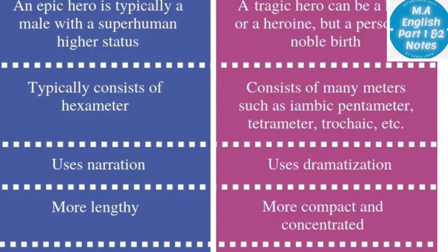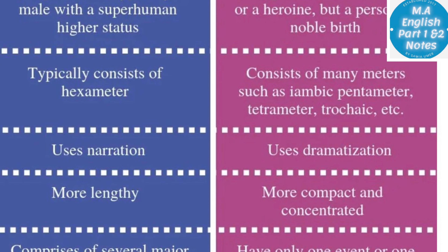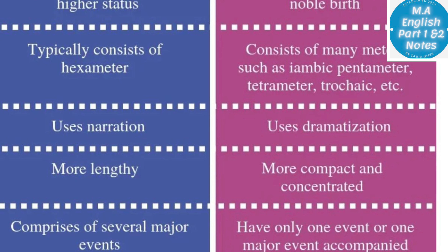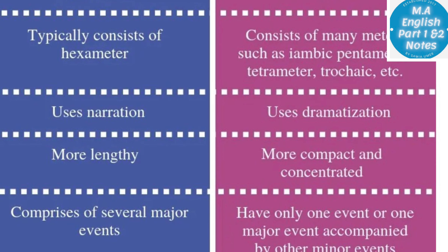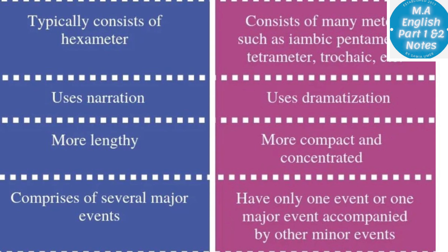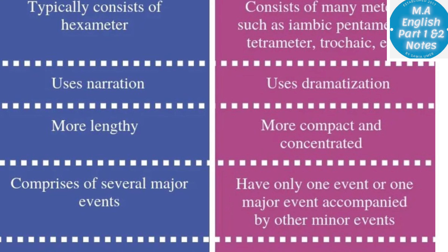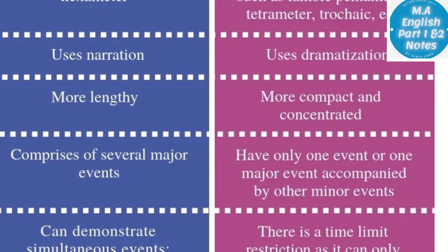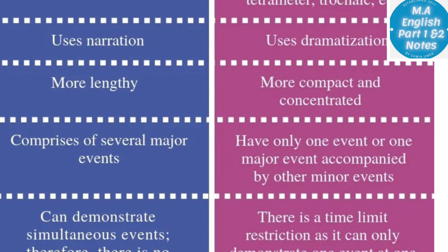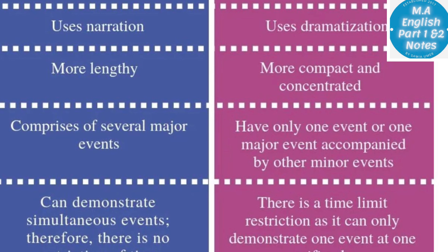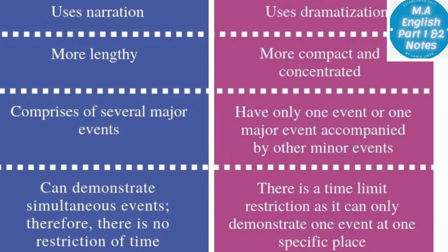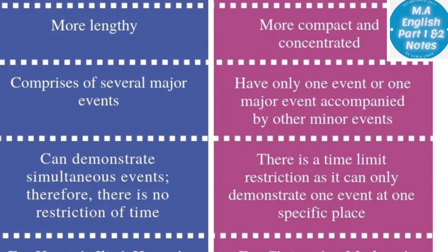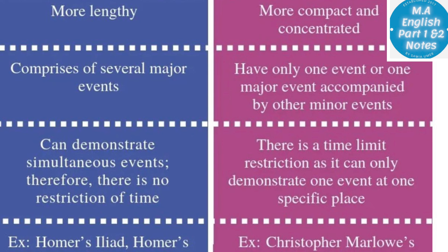The aim of tragedy is to invoke catharsis in the audience and to warn them of similar situations in their lives as well. An epic hero is typically a male with a superhuman high status. A tragic hero can be a hero or a heroine, but a person of noble birth. Epic typically consists of hexameter. Tragedy consists of many meters such as iambic pentameter, tetrameter, etc. Epic uses narration and tragedy uses dramatization. Epic is more lengthy and tragedy is more compact and concentrated.